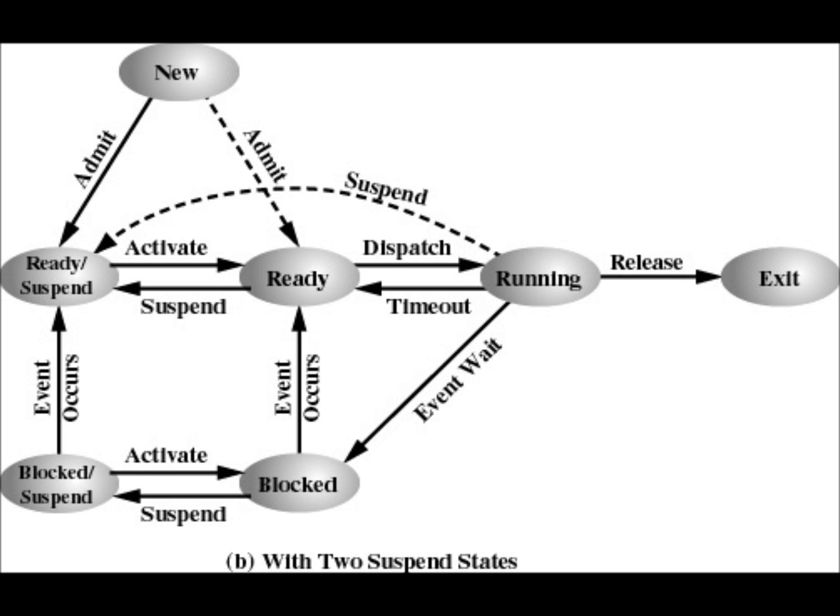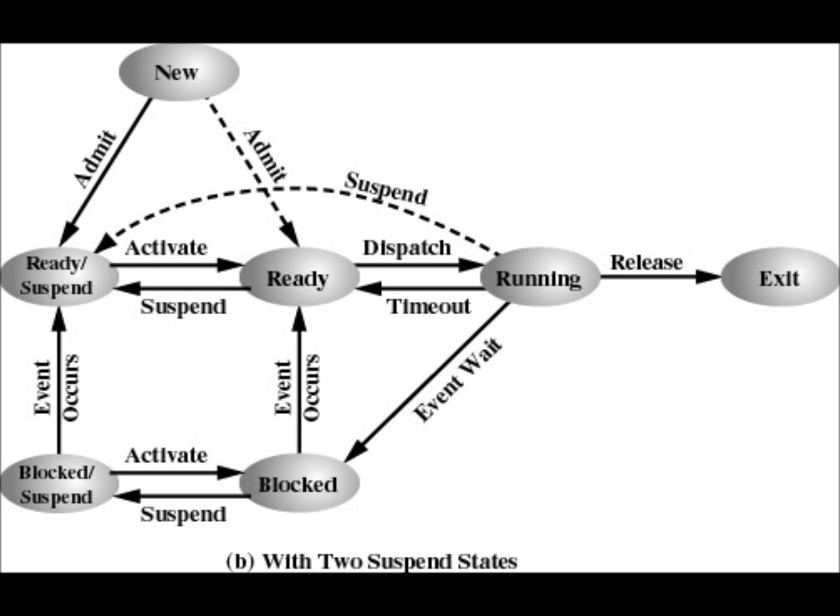So this is how operating systems create processes and what are the different states in which a process runs. In the next video we'll see how operating systems actually handle it because we need the concept of process control blocks, the data structure which operating systems maintain to handle different processes and mechanisms. That we'll see in the next companion video but this video acts as basis for the next video. If you have any questions please write them in the comment section and if you want to check our different videos you can subscribe to our channel.